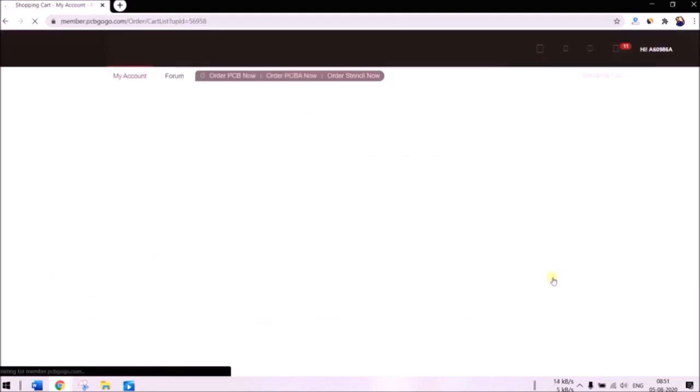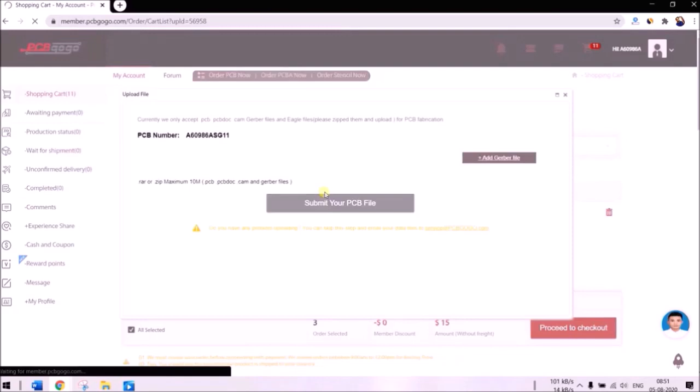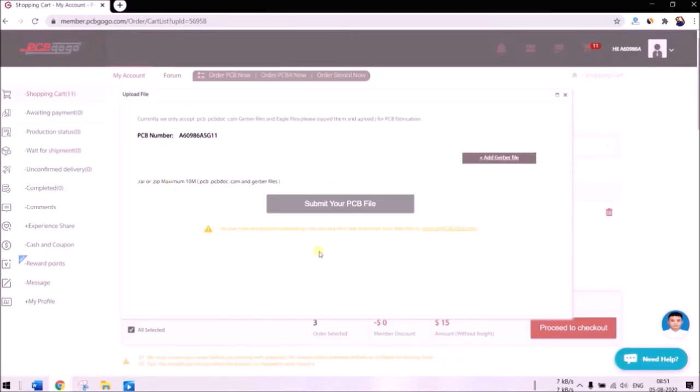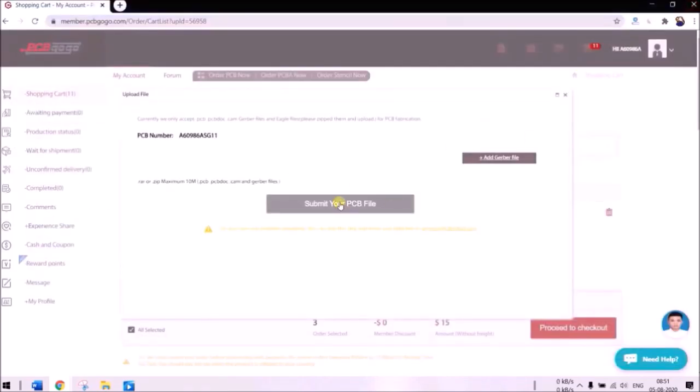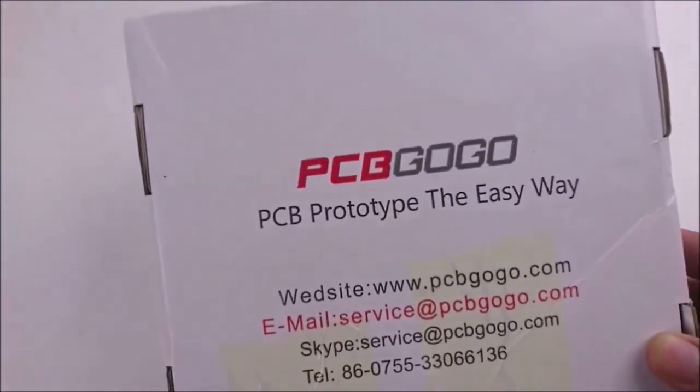Then click on add to basket and you will be taken to another page where you have to upload the Gerber file for your PCB. For this project you can find the Gerber file at the link in description. Just click on add to Gerber file and upload the Gerber file of your PCB. Then proceed with checkout by entering your address and making the payment. Within few days your PCBs will arrive at your doorstep.